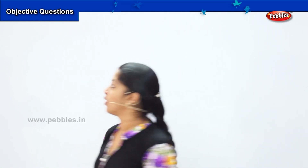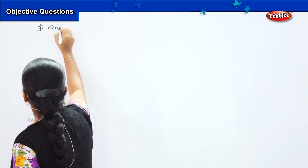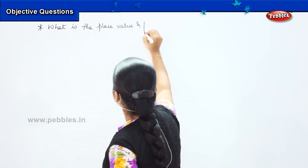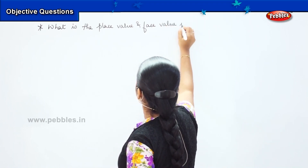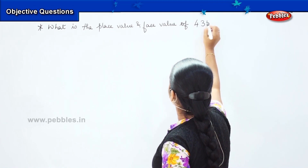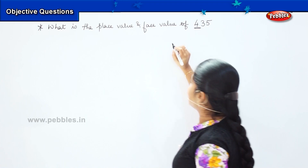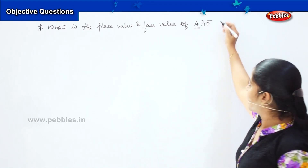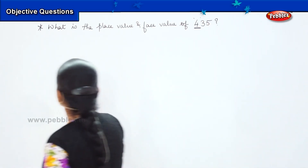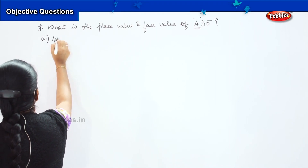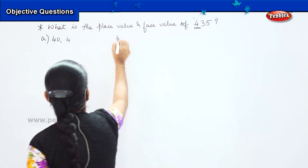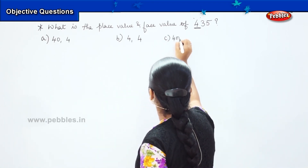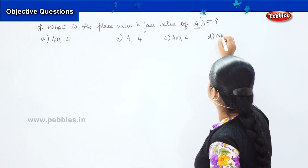My first question says: what is the place value and face value of the number 4 in 435? The number 4 is being underlined. You have to tell me the place value of 4 in the number 435. My options are: option A — 40 and 4; option B — 4 and 4; option C — 400 and 4; and option D — none of these.